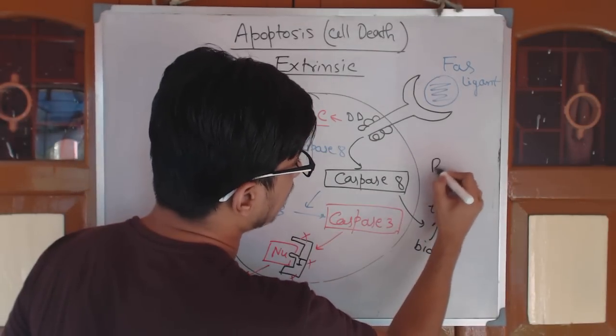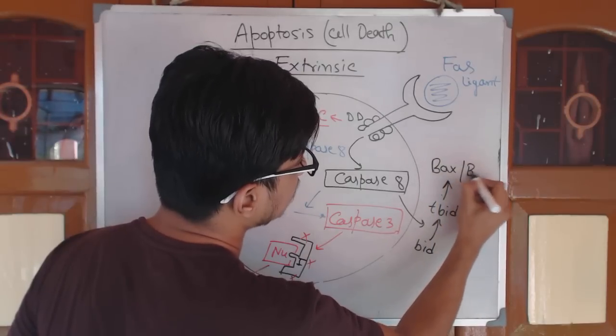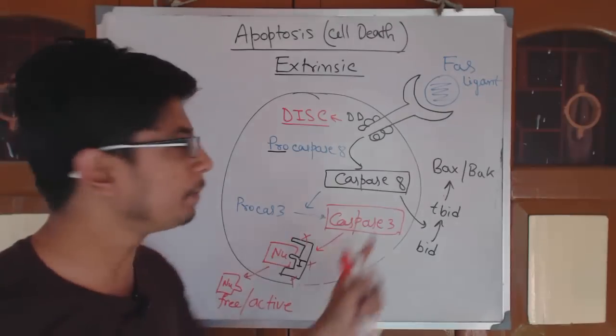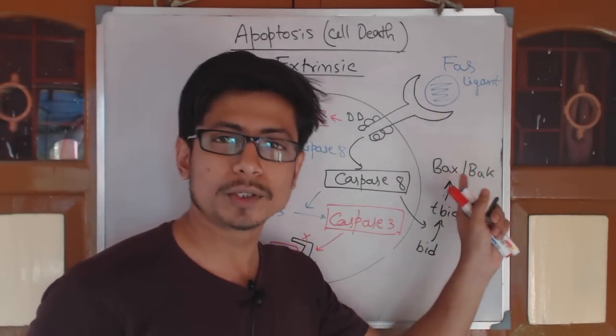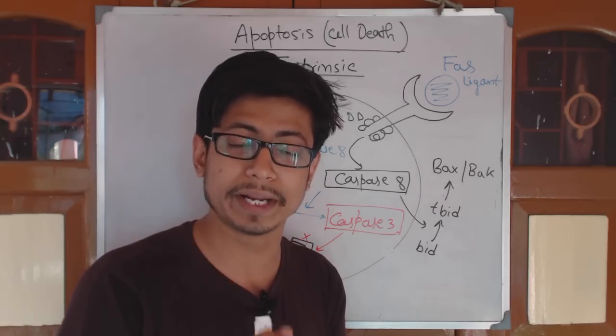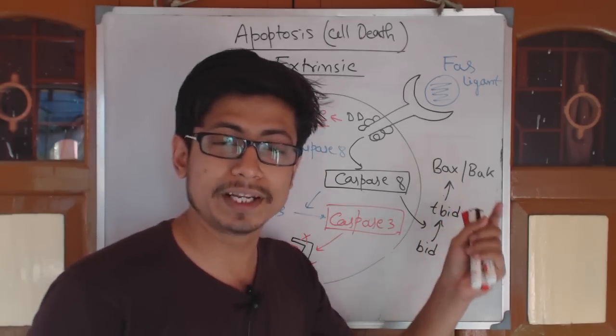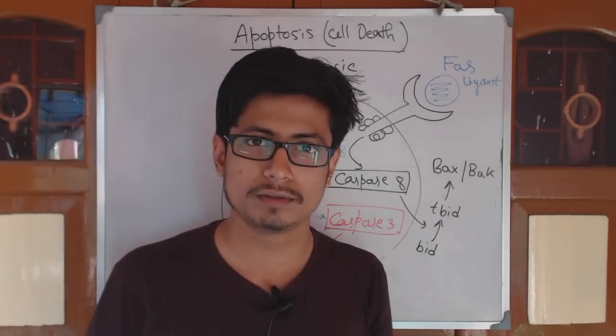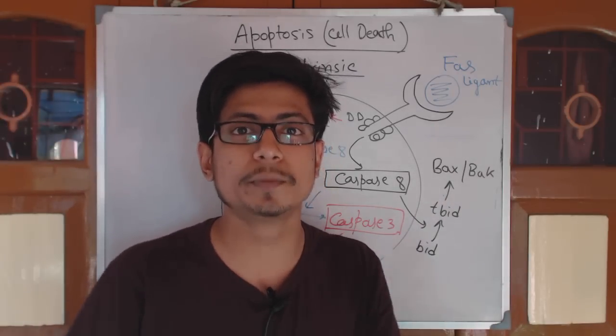TBID is going to activate Bax and Bak. Remember Bax and Bak, both of them are responsible for creating pores in the mitochondrial membrane. As a result, cytochrome C will come out, so the intrinsic pathway will also be triggered.